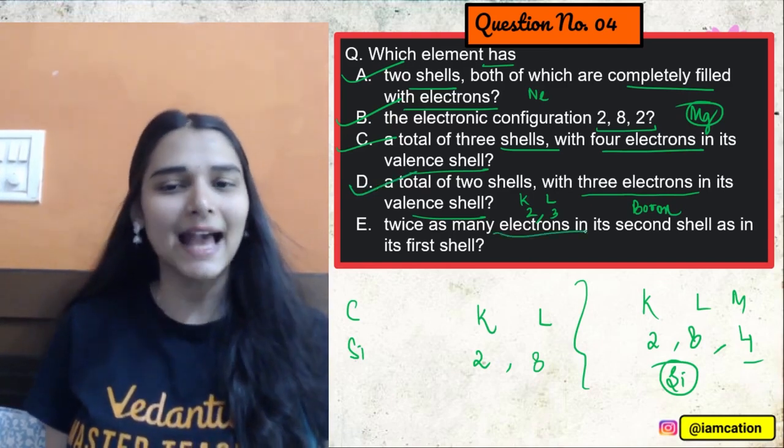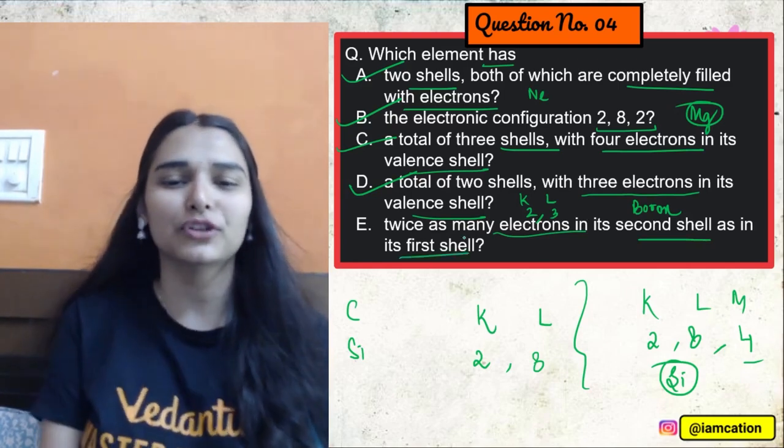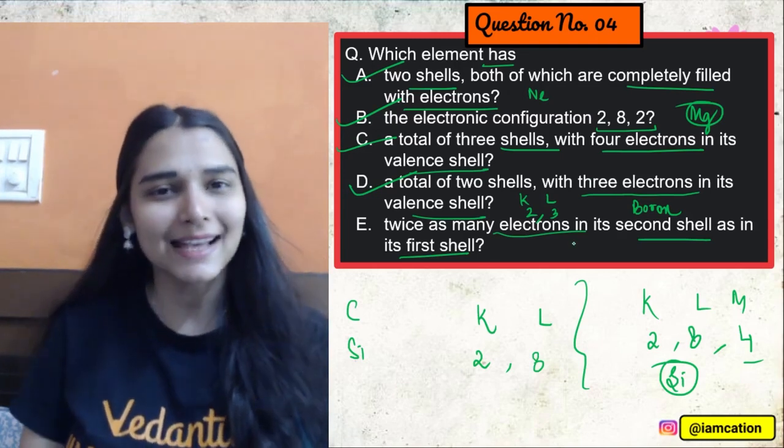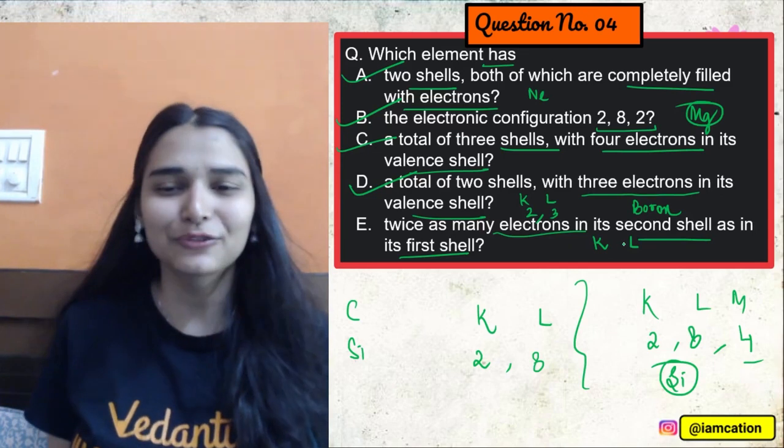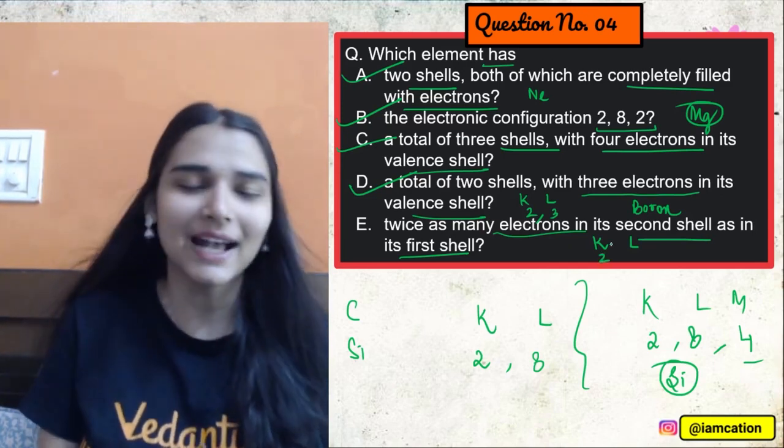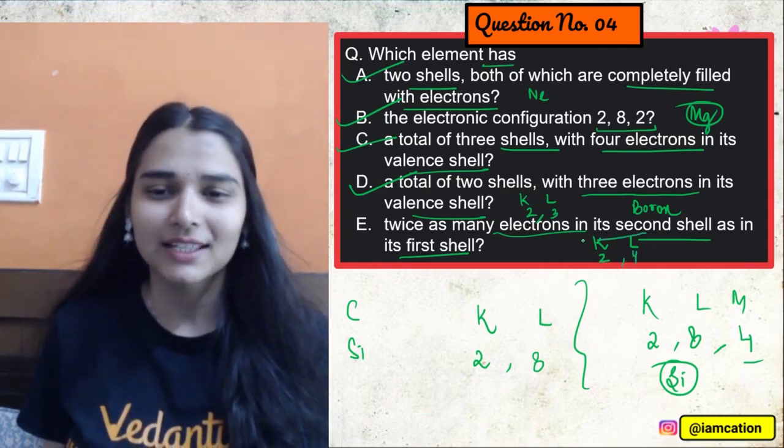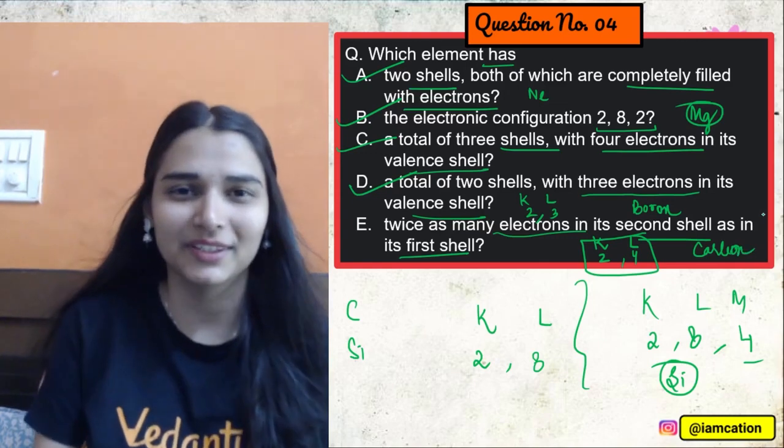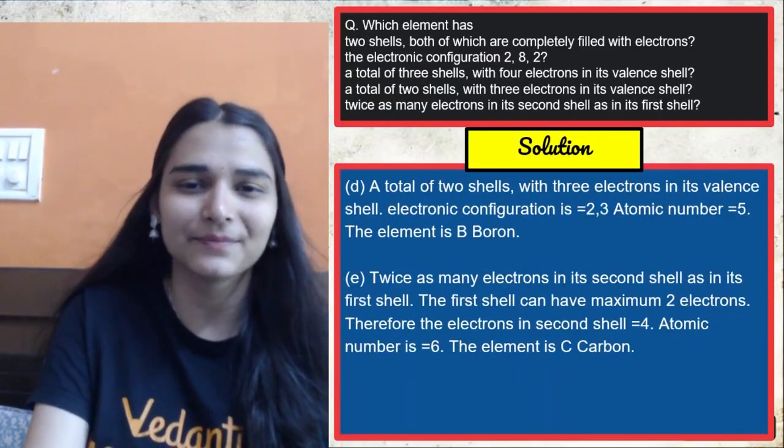The next one. Twice as many electrons in its second shell as in its first shell. We did a camp. Twice as many electrons in its second shell as in the first shell. First shell mein toh there can be a maximum of two electrons. Twice of two, that will be four. Six atomic number. This is your carbon. Versatile carbon. Asaan tha na? Not too much. So check your answers. Easy. Last question. We gonna see now.